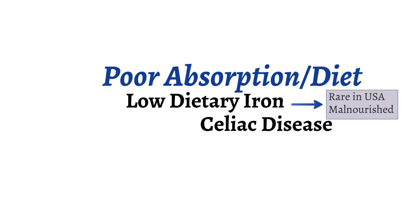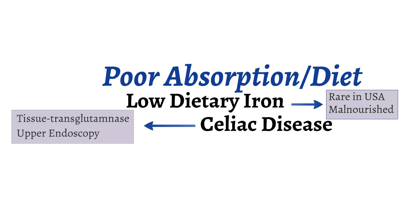A common absorptive problem causing iron deficiency anemia is celiac disease. Celiac disease is an immune-mediated response to gluten in the diet that causes a destruction of the absorptive surface of the small bowel. The loss of the absorptive surface prevents iron absorption. We can diagnose celiac disease by obtaining IgA and IgG tissue transglutaminase levels with total IgA levels, as well as doing an upper endoscopy with duodenal biopsies. The treatment of celiac disease is a gluten-free diet.